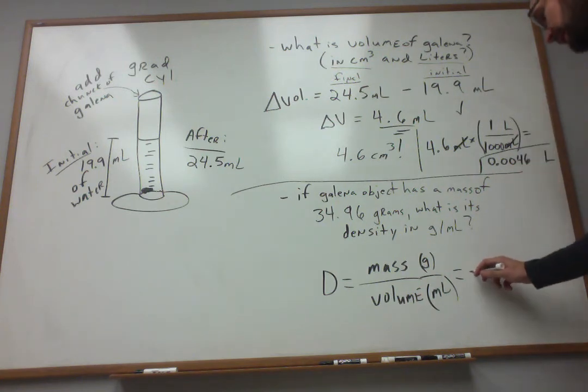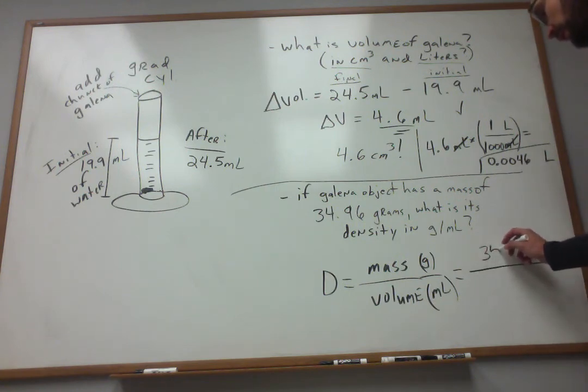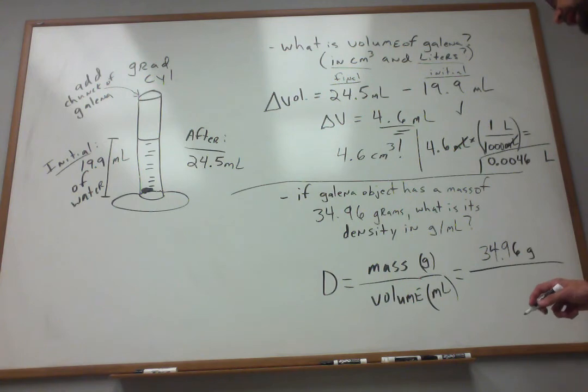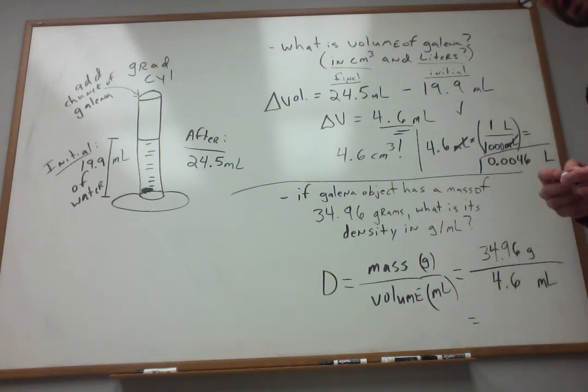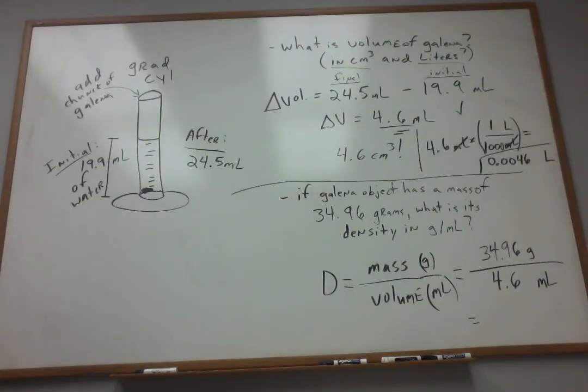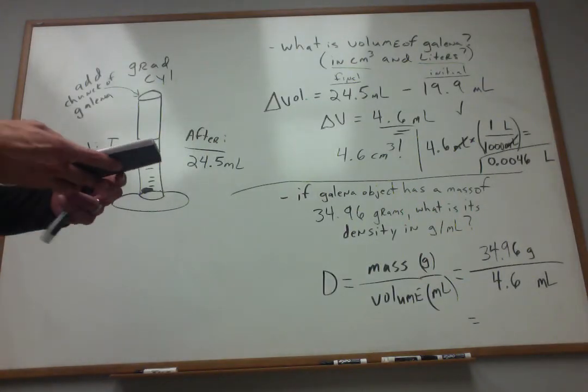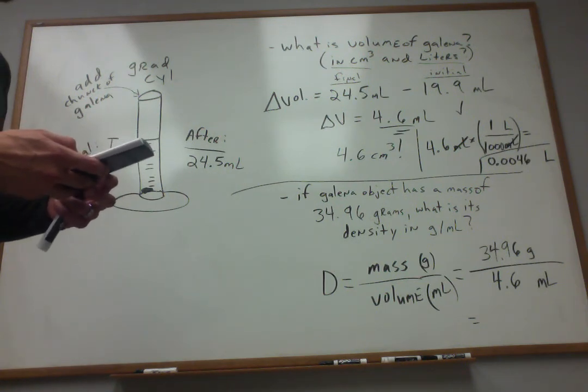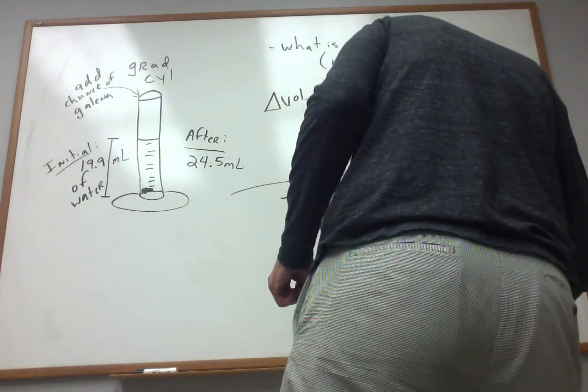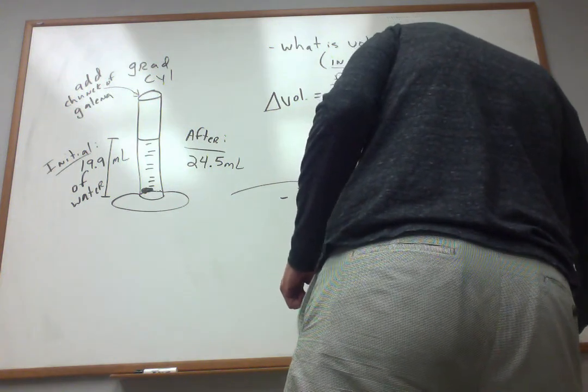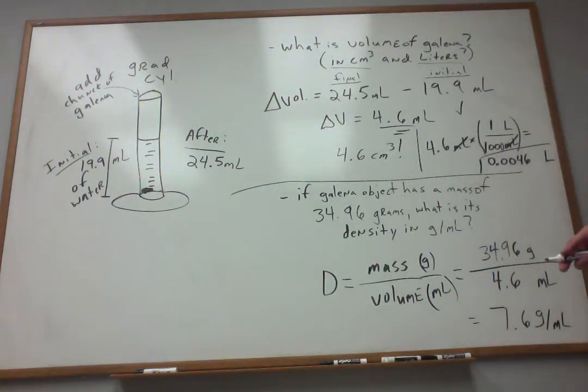So for us to compute the density of the galena, it's not going to be too terribly difficult. Because we were told that when we weighed the object, it had a mass of 34.96 grams. And when we measured the volume by water displacement, we were told that that volume was 4.6 milliliters. So we have the grams, the mass. We also have the volume as 4.6. So let me get my calculator here real fast and break out this calculation. 34.96 divided by 4.6.